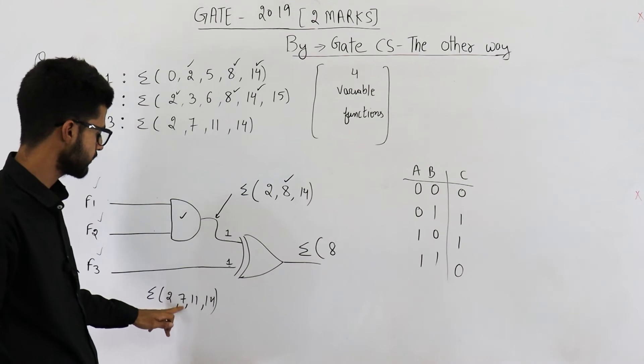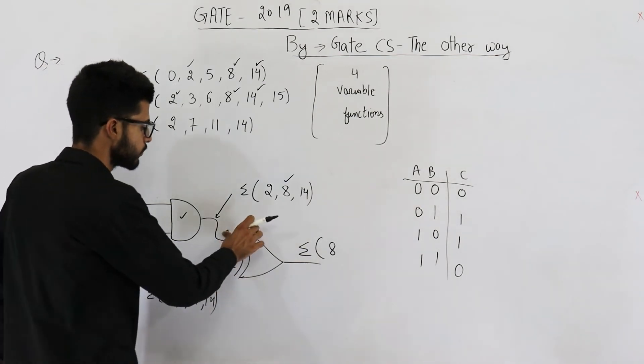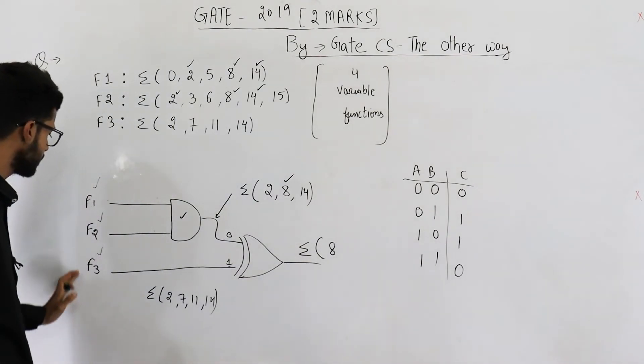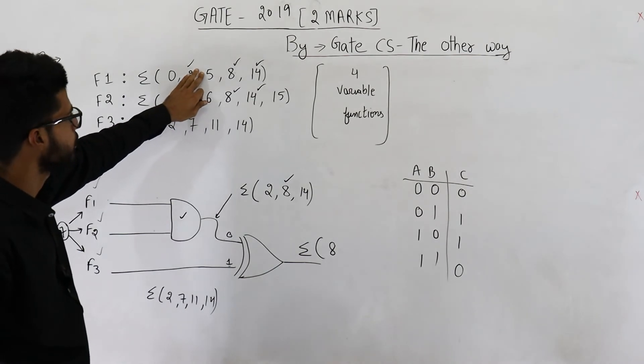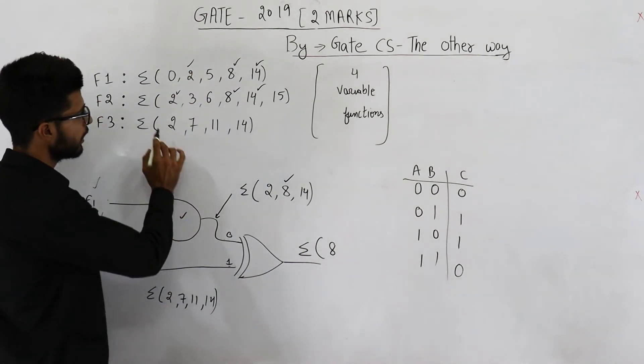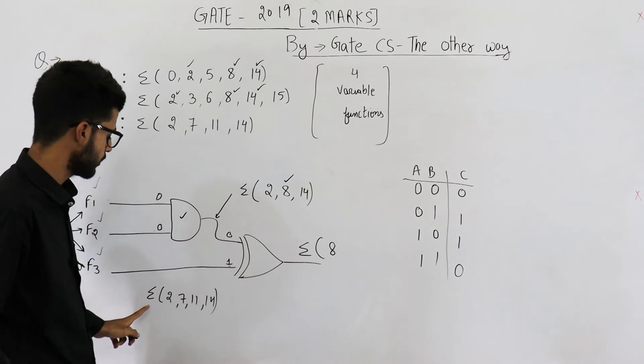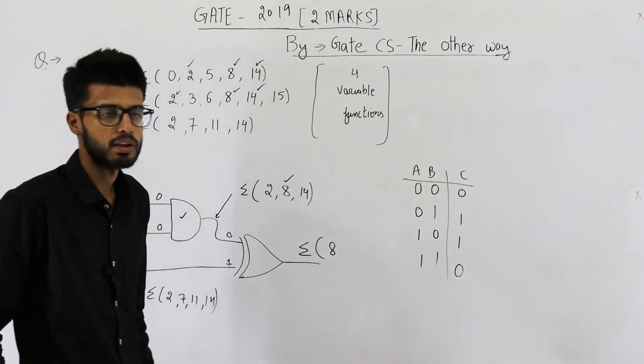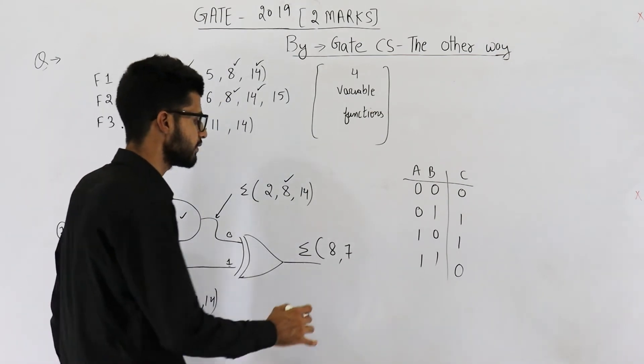So next one is 7 and 11. In case of 7 as well as 11 only this wire will contain a positive voltage. Here you are going to have 0. Let's analyze how it is 0. Say all these three functions are given input 7. On 7 you can see F1 will not provide output so this wire will contain 0. F2 will also not provide output so this wire will also be 0. 0 and 0 is 0. But F3 will provide output so this wire will be 1. 0 XOR 1 is 1, that means 7 is going to be present in output. Similarly 11 will also be present in the output.